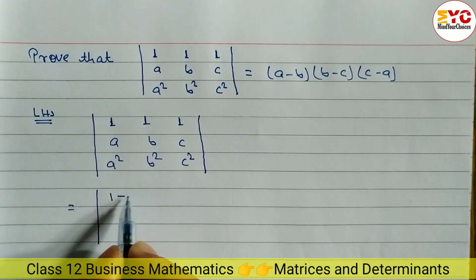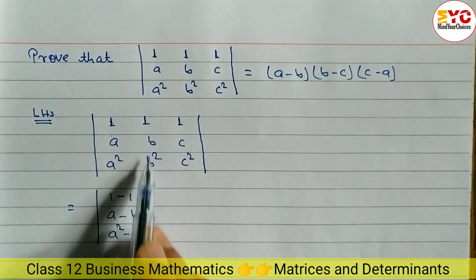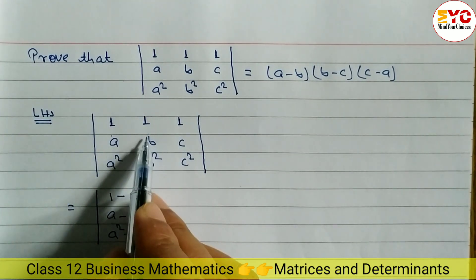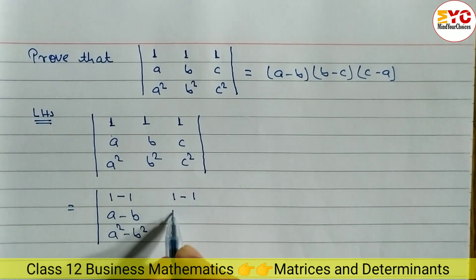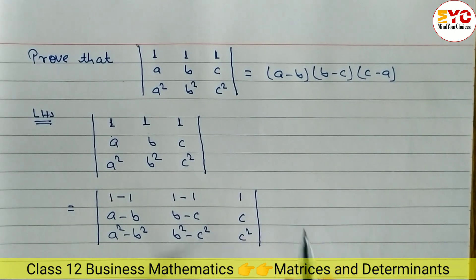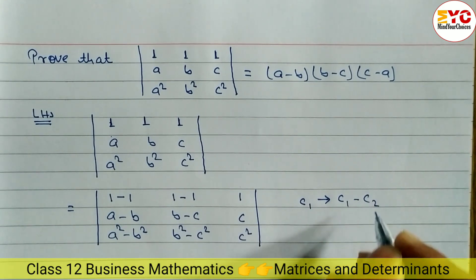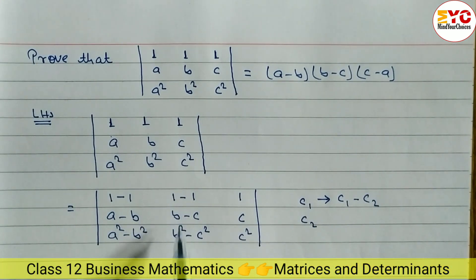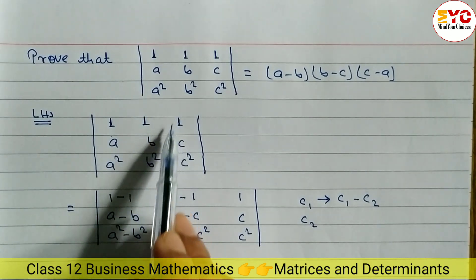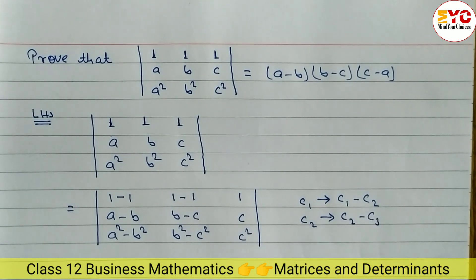In the first column, we subtract the first and second columns: 1 minus 1, A minus B, and A square minus B square. Similarly, in the second column, we subtract the second and third columns: 1 minus 1, B minus C, B square minus C square. The third column remains the same: 1, C, C square. The reason: C1 becomes C1 minus C2, and C2 becomes C2 minus C3.